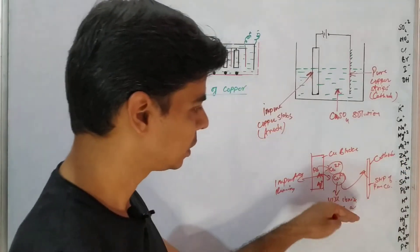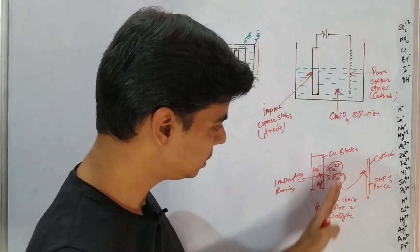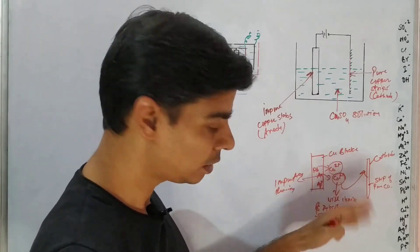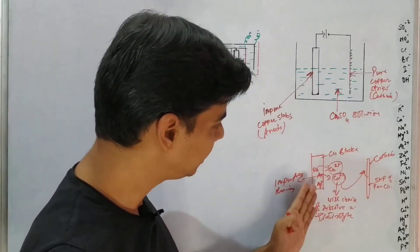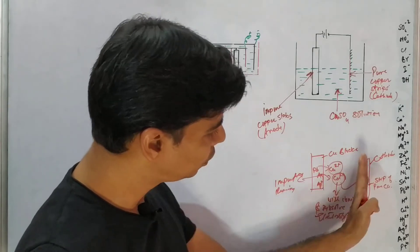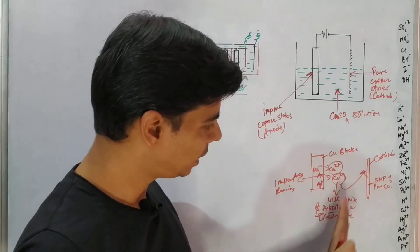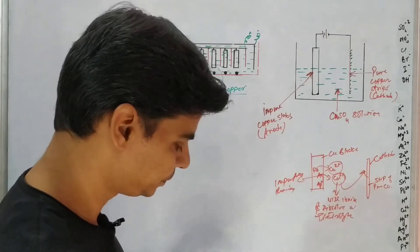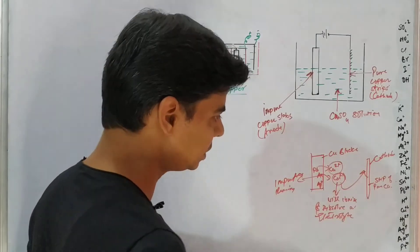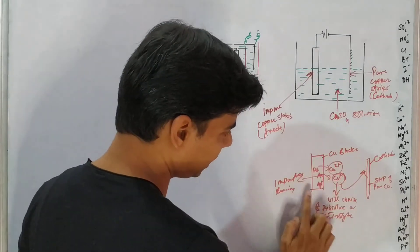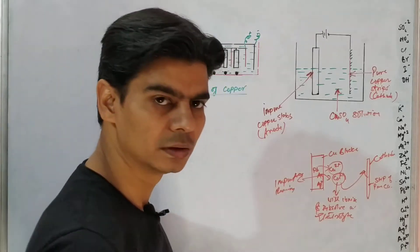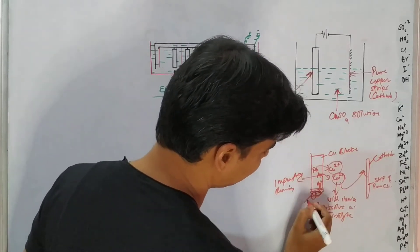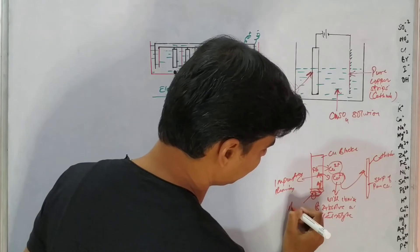The copper ions will move to the cathode and deposit there in the form of pure copper metal. The metallic impurities will settle near the anode — this is known as anode mud.